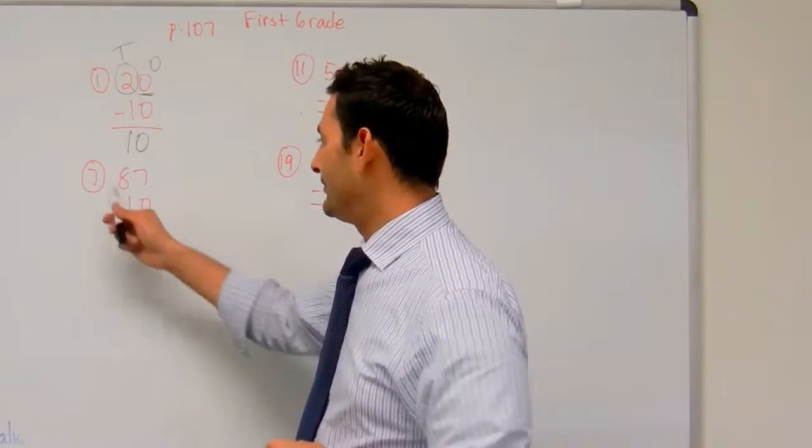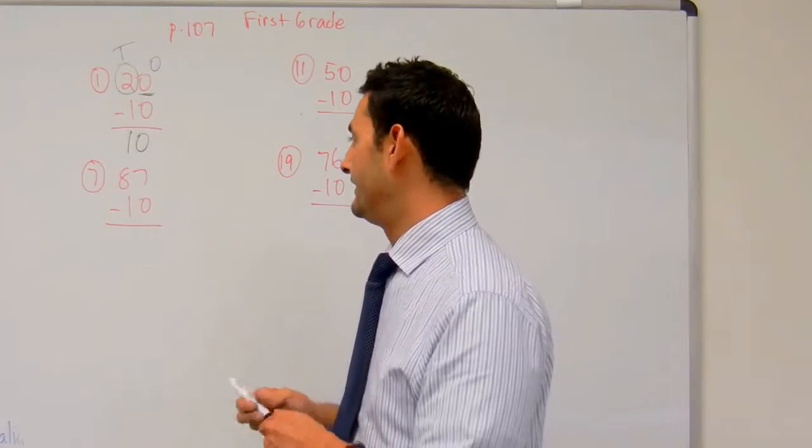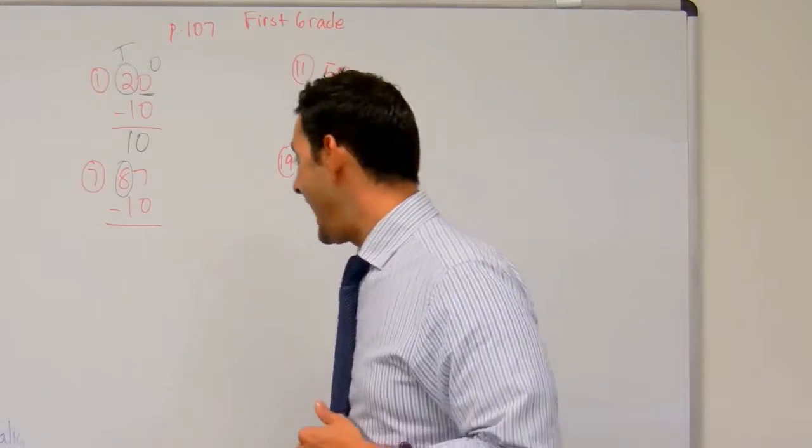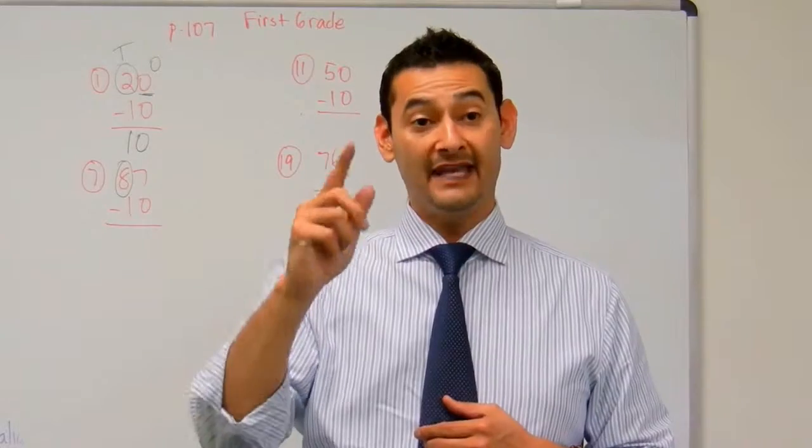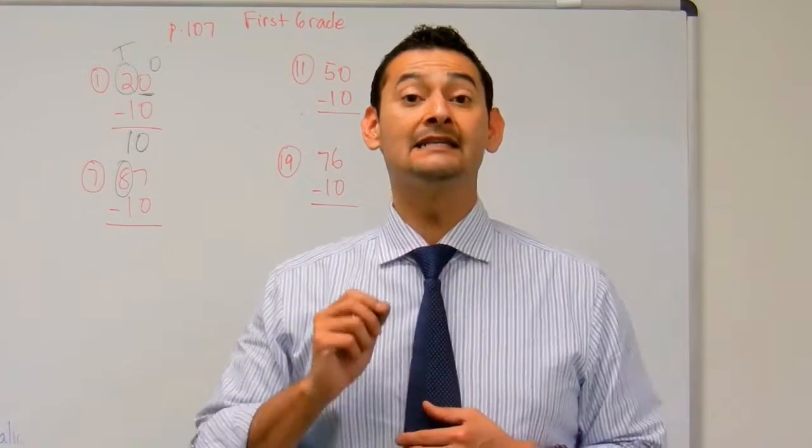Now let's take a look at number seven. Here we have eighty-seven minus ten. What's going to change? This digit here, one in the tens place. And we're going to go down one. So we have eighty-seven go down one. Ten, the eight is going to become a seven, so eighty-seven minus ten, seventy-seven.